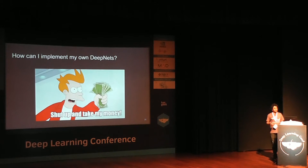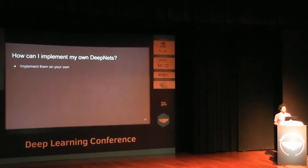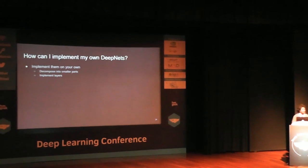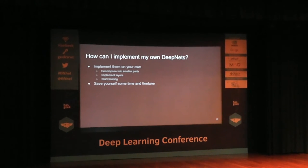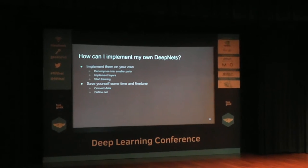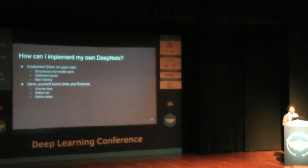So the question is, how can I implement my own deep nets? At the end of this talk, if you haven't implemented your own deep nets yet, you will be able to do so. To implement them, if you know what kind of deep network you're planning to build, you decompose it into smaller parts, implement the layers one by one using Theano or something similar, and then start training. But there is something more — it's called fine-tuning, where you can save time by fine-tuning a pre-trained network. For fine-tuning, you need to convert the data, define a network — AlexNet, GoogleNet, VGG — and define a solver.